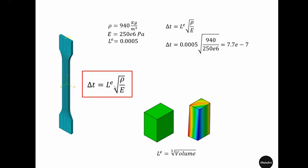More importantly, the characteristic length of an element represents the smallest element in your model. So if you have a model where all elements are 0.0005 m but there is one element that is 10 times smaller at 0.00005 m, that one element makes the stable time increment 10 times smaller for the whole model.